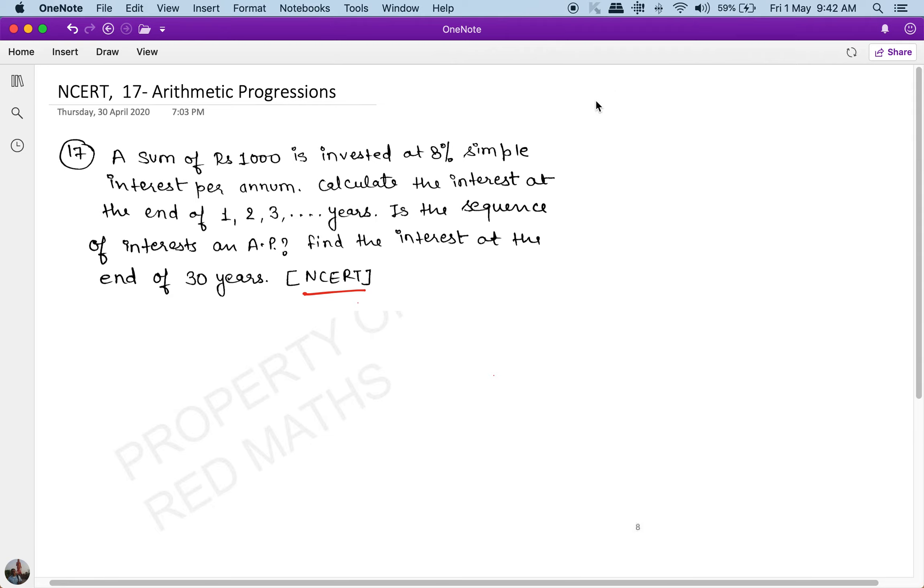Okay, so interest at the end of 30 years. Now the question is what is the formula for simple interest? Simple interest is equal to P × R × T / 100. This is the amount of interest. Now if time is one, this will be P × R / 100 × 1. At the end of second year it will be P × R / 100 × 2.